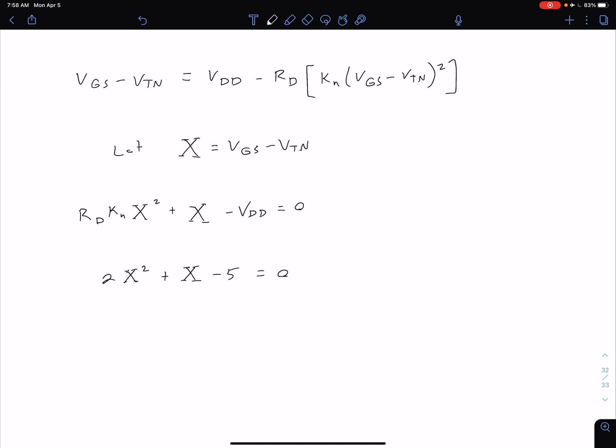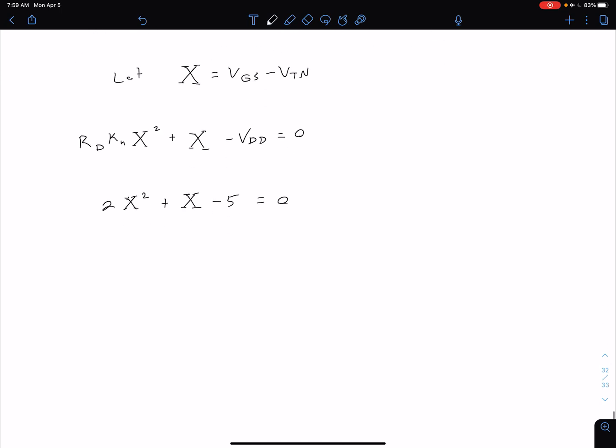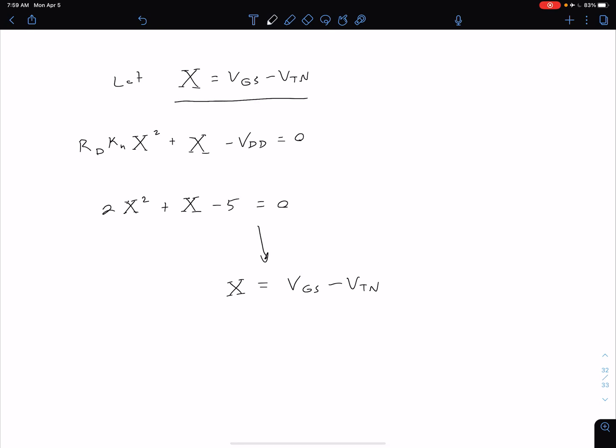That's just a simple quadratic equation we can solve in our calculator, in MATLAB, using our quadratic formula, however you want to do that. You should end up with two answers for X. Our negative value answer doesn't make physical sense based on the fact that we have an enhancement mode NMOS. We can zero in on the positive one. We get that our X, which remember is VGS minus VTN, is equal to approximately 1.351 volts.